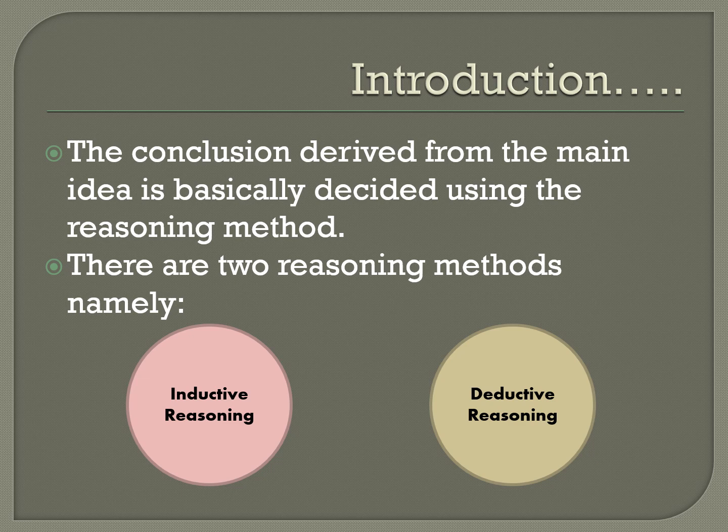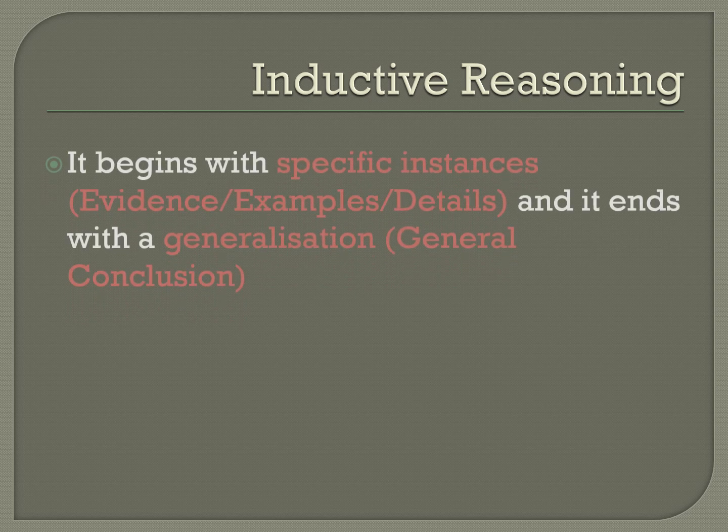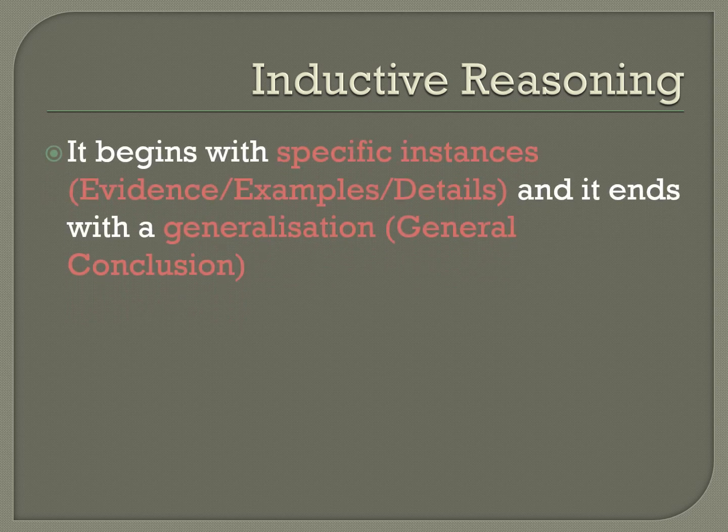There are two types of reasoning. The first one is inductive and the second one is deductive. Inductive reasoning begins with specific instances in the form of evidence, examples, or details. Towards the end, you can see that it leads to a generalization or a general conclusion. So it begins with something specific and ends with a general conclusion — that is inductive reasoning.